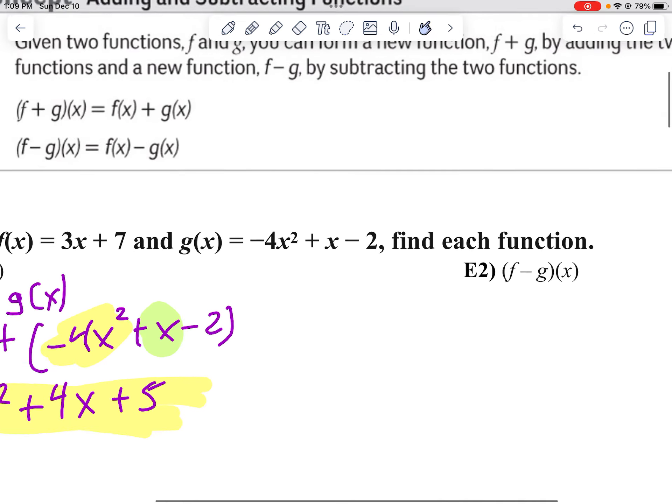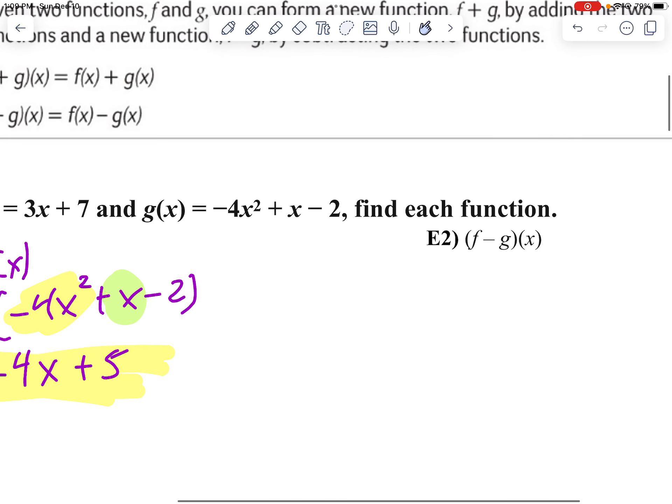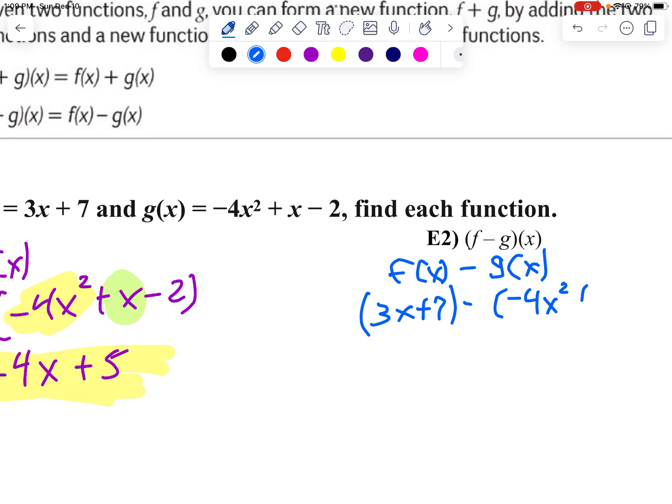Now let's take a look at example 2. We're going to go through the same process, except now we're going to subtract them. So in other words, it's f of x minus g of x, which is going to be 3x plus 7 minus negative 4x squared plus x minus 2. Remember when you subtract, we add the opposite. So it's actually 3x plus 7. I'm going to change my minus sign to a plus. I'm going to distribute that negative sign to each term. So I'm going to go plus 4x squared minus x, and then plus 2. Changes signs of everything.